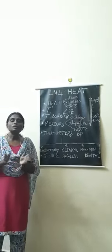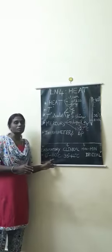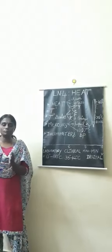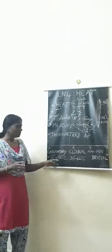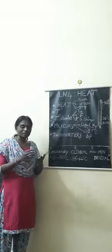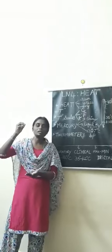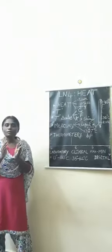Now we are going to see about different types of thermometers. The first one is the laboratory thermometer. It is specially designed for lab use. Compared to all thermometers, this one is large in size. It is a narrow glass tube. The range of the laboratory thermometer is 0 degrees Celsius to 110 degrees Celsius.